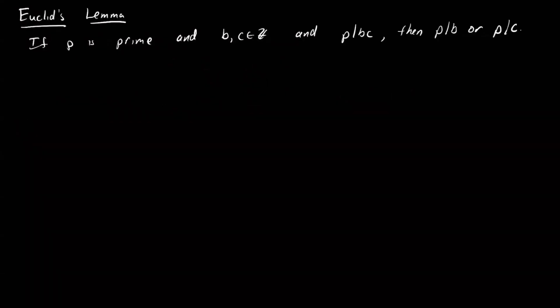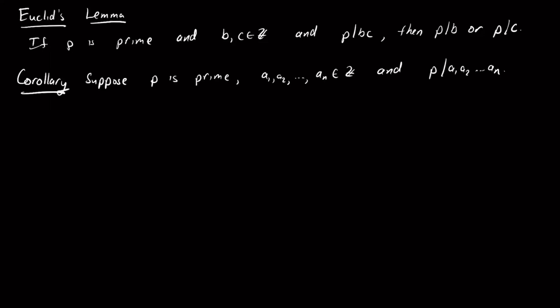The forward direction of this theorem is called Euclid's Lemma: if p is prime and p divides bc, then p divides b or p divides c. This has an important corollary needed for unique prime factorizations: if p is prime, a₁ through aₙ are integers, and p divides their product, then p must divide at least one of the aᵢ's.